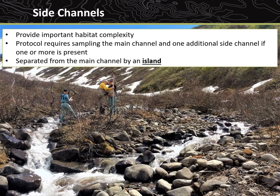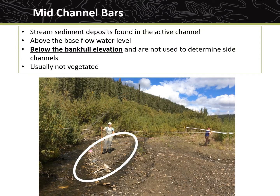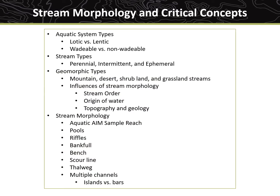The final critical concept covered in this video is side channels. Many streams may have multiple channels, which create important habitat complexity. The Lotic AIM protocol requires sampling the main channel and one additional side channel, if one or more is present. Side channels must be separated from the main channel by an island, rather than a mid-channel bar, in order to count as a separate channel. Islands are stream sediment deposits that have an elevation above bankfull and are usually vegetated with perennial woody vegetation. Mid-channel bars are also stream sediment deposits with an elevation above the baseflow water level, but below the bankfull elevation, and are almost always unvegetated.